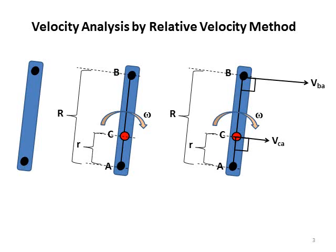To find the linear relative velocity, we draw a line perpendicular to the link. Similarly, to find the relative velocity at point C, we draw a line perpendicular to the link and label this velocity VCA, which represents the relative velocity of point C with respect to point A. The distance between B and A is capital R, and the distance between C and A is small r.